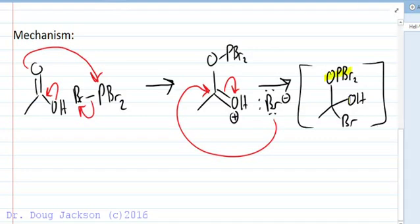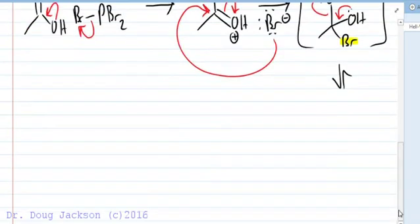The better leaving group is here versus the bromine and if we eliminate the bromine nothing happens. This is somewhat reversible at this point. We should point that out that we're at this point reversible and so if we kick off the bromine nothing happens. So what we're going to do is in the scenario that gets us closer to the product we're going to kick off the OPBr2 and let's look at what we're left with.